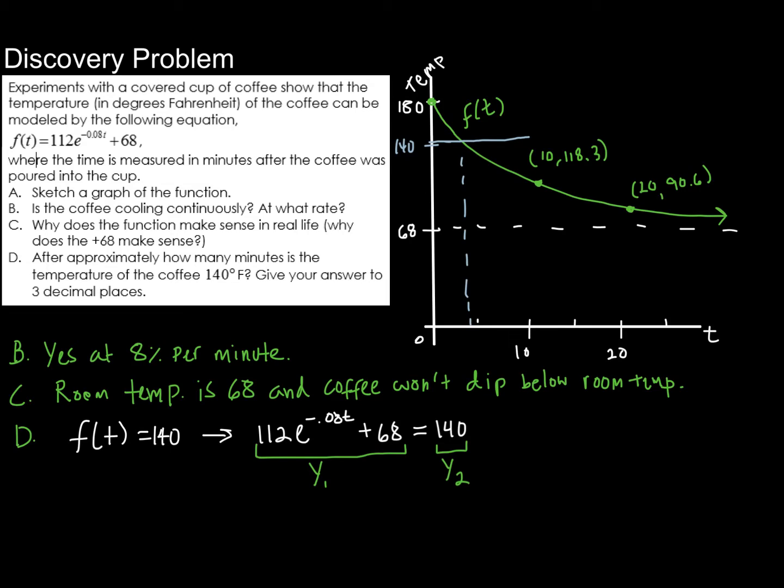And if you do so, you will find that the exact value at which the functions intersect is going to be when t is equal to 5.522. Now, this makes sense because when we did our approximation, we ended up with something a little before 5, and thus 5.22 makes perfect sense. So the coffee will be 140 degrees Fahrenheit after approximately 5.522 minutes.